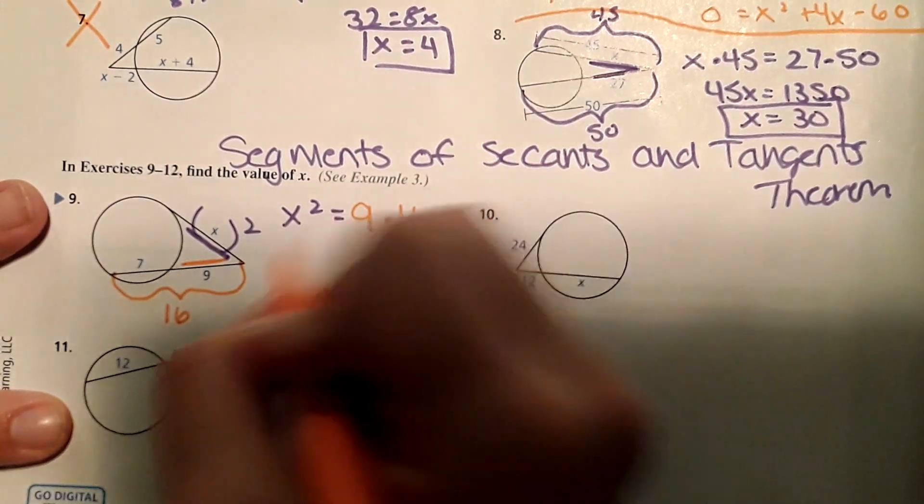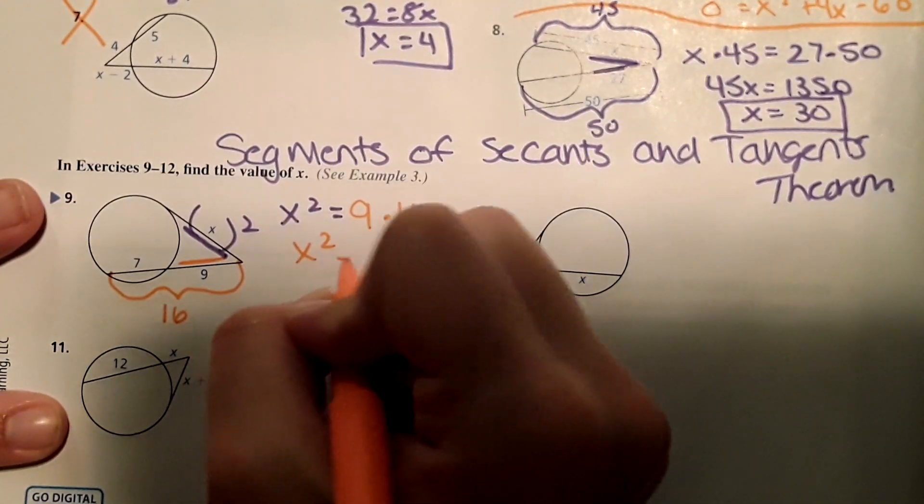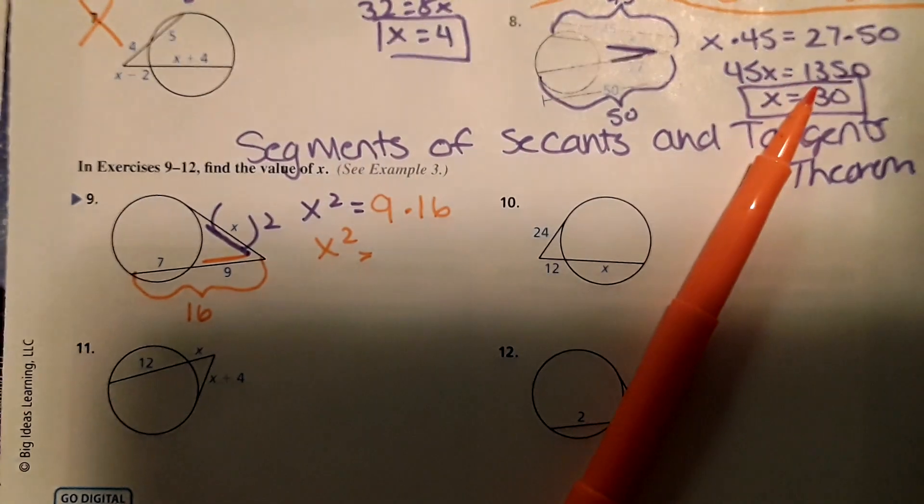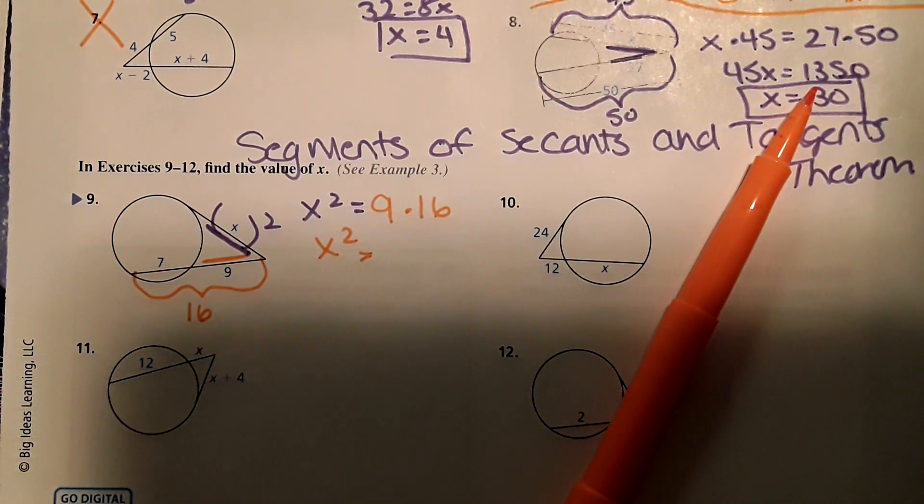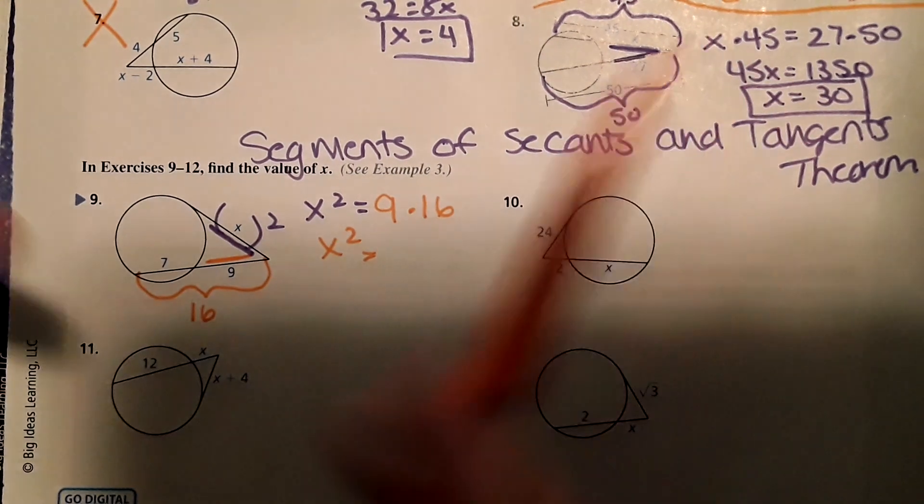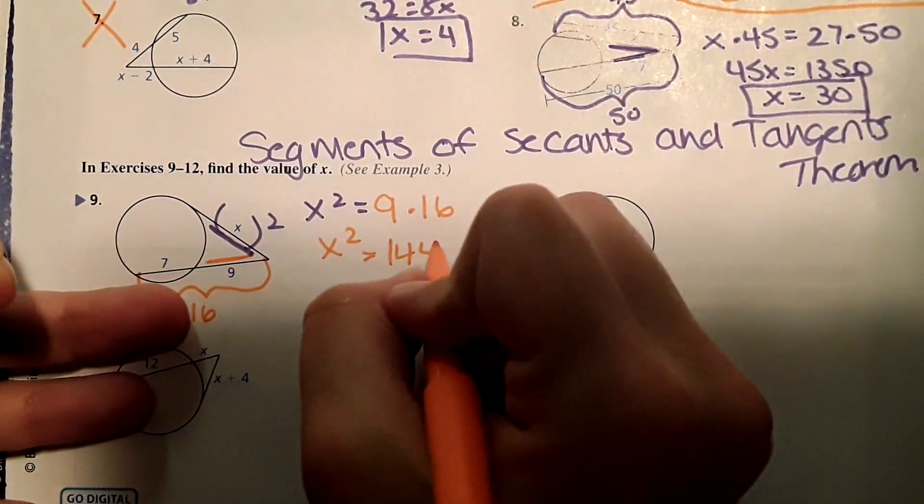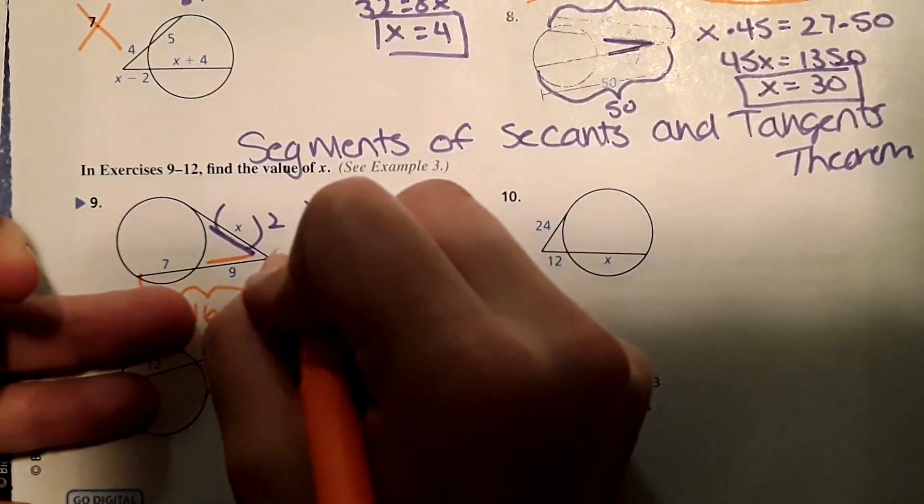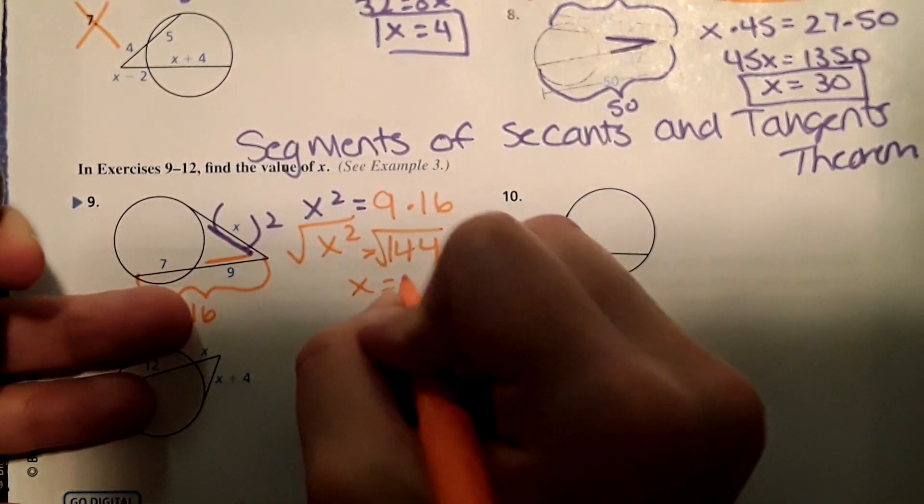X squared equals 9 times 16, which is 144. Then you take the square root of both sides, and X equals 12.